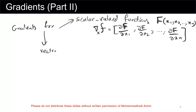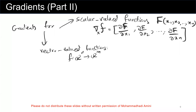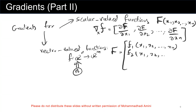For a vector valued function from R^n to R^m — from n-dimensional space to m-dimensional space — the function is defined with components f sub 1 through f sub m, each taking inputs x1, x2, through xn, giving m outputs.